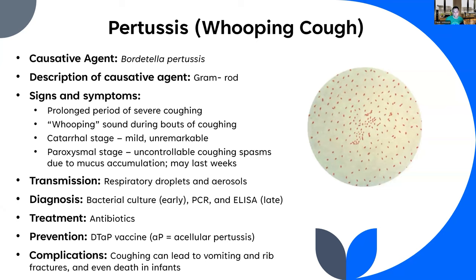The coughing can be so pronounced and the bouts can last so long that vomiting can happen and rib fractures can occur. It's not uncommon for people to break their ribs from coughing so hard as a result of this. In severe cases in infants, this can be fatal because of the amount of mucus accumulation.